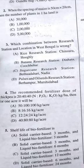Question 3: Which combination between the research station and location in West Bengal is wrong? The answer should be B — Banner station in Dinata/Coochbehar is wrong; the other stations are placed in correct positions.